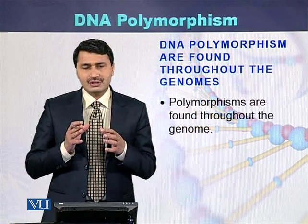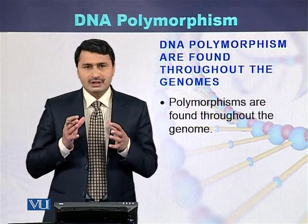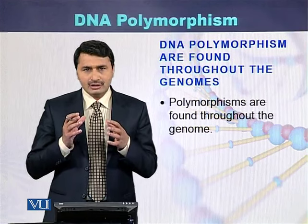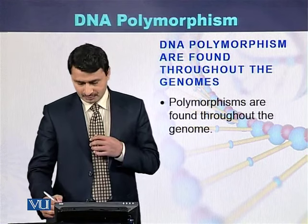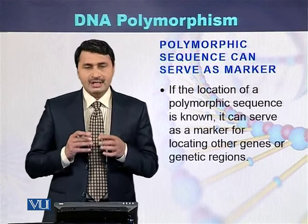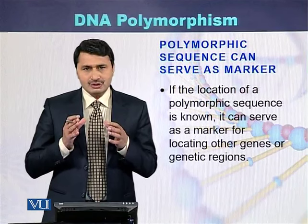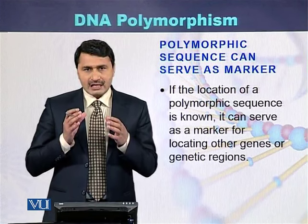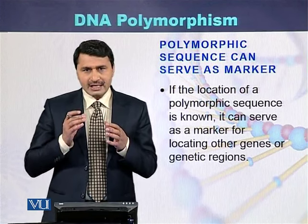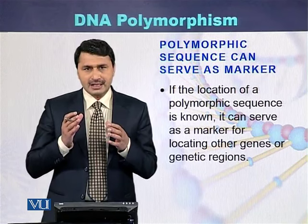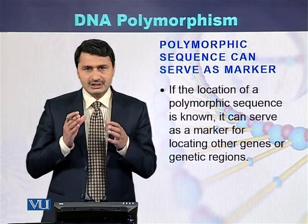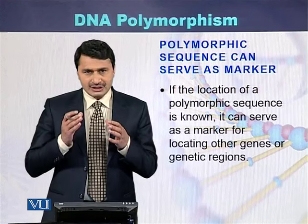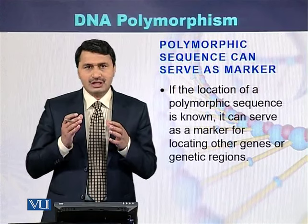DNA polymorphisms are found throughout the genome. They are present on each part of the DNA and on all the chromosomes. If a polymorphic sequence is known, it can act as a location to identify other genes or genetic markers. Non-polymorphic regions can also help identify other genes and genetic regions on the genome.